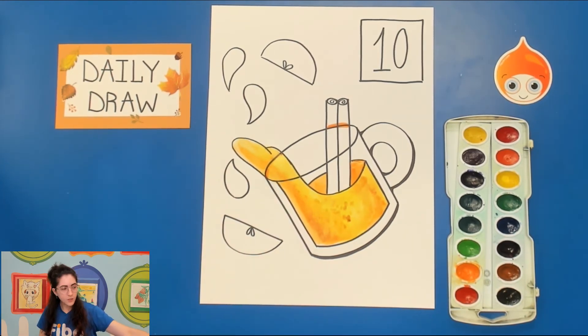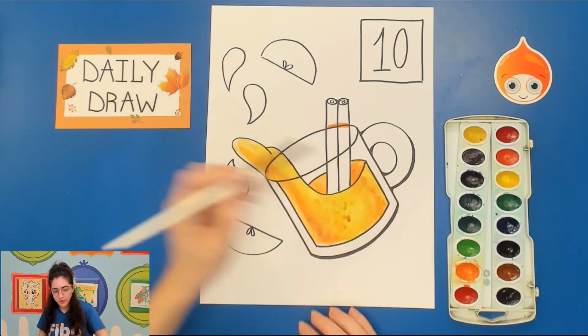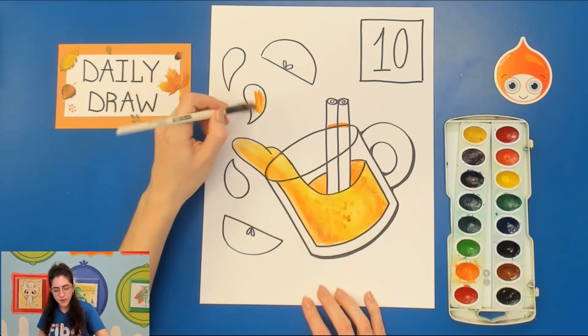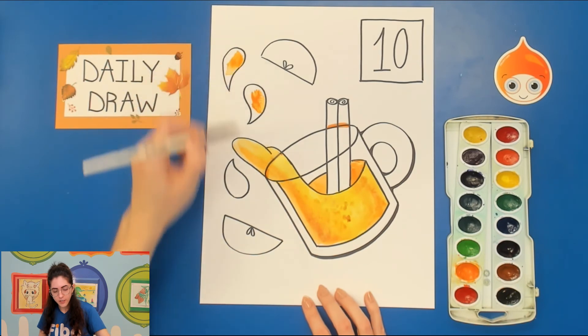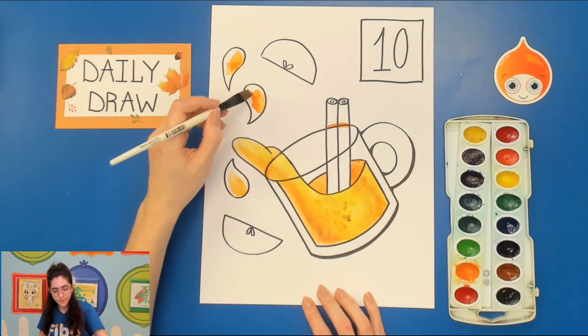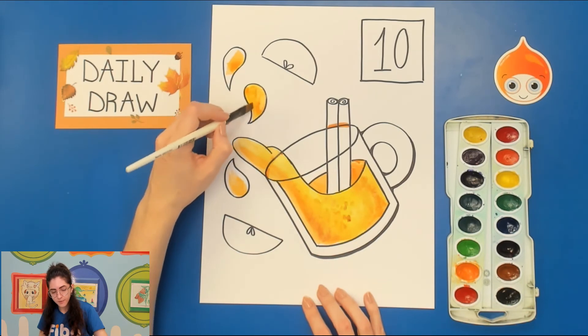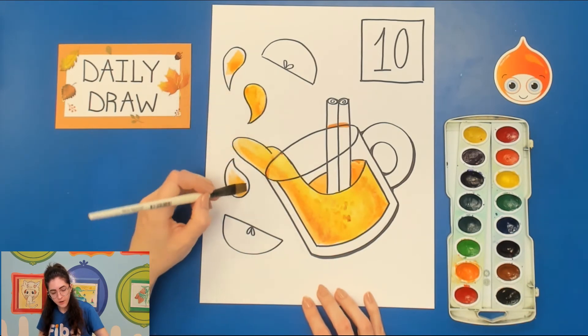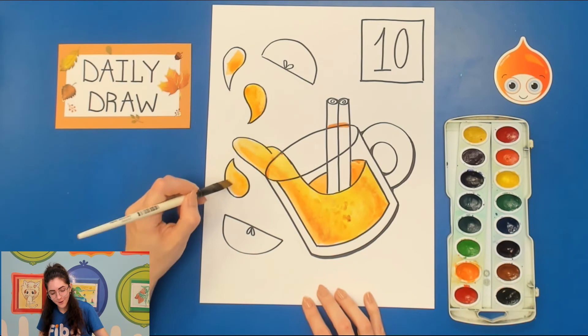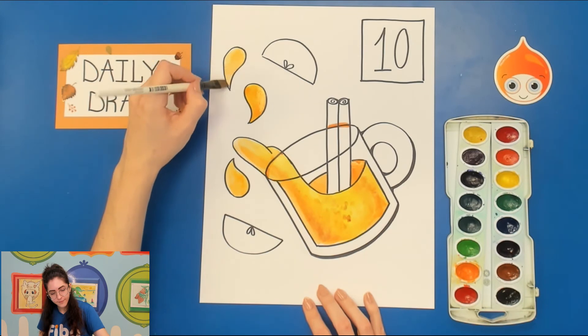So now what we can do is we can start to fill in those little parts that are splashing out. So you can do this with a combination of the yellow orange and yellow. I'm going to do the combination of both. If a medium brush is too big for you, you can use your smallest brush that you have. I'm feeling pretty confident with the medium brush so I'm just going to move forward with this one.